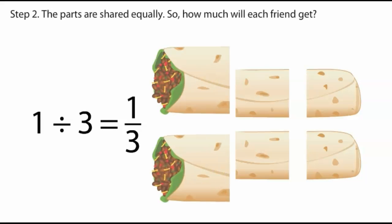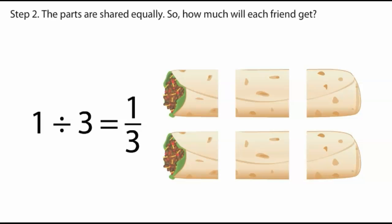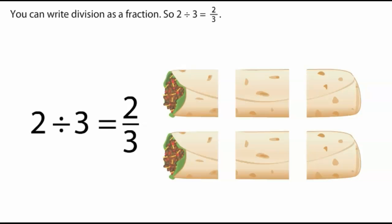Step two: The parts are shared equally, so how much will each friend get? You can write division as a fraction, so two divided by three equals two-thirds.